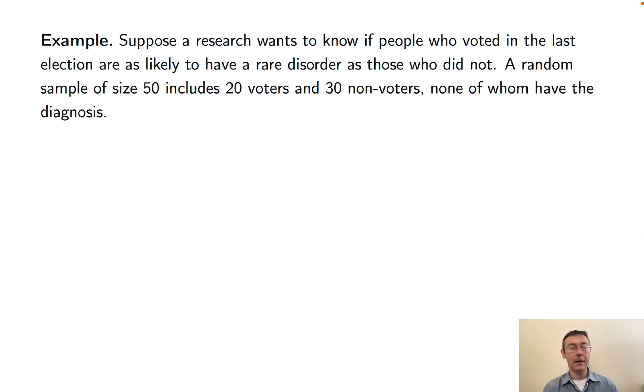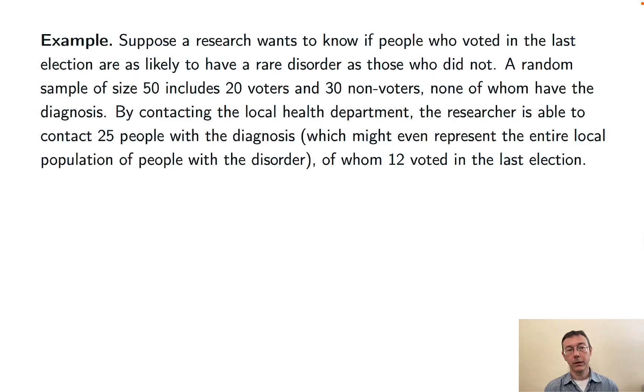Let's see an example like that. Suppose you have a researcher that wants to know if people who voted in the last election are as likely to have a rare disorder as those who didn't vote. So they go out and they get a random sample from that population of size 50. They get 20 voters and 30 non-voters, but none of them have the diagnosis. So again, you can't really do much with this in terms of computing relative risks between these two groups, because you got no occurrences.